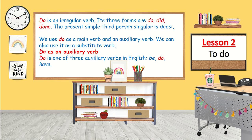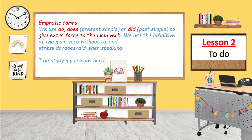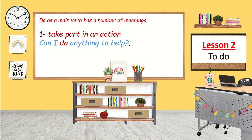Do is one of the three auxiliary verbs in English: be, do, and have. We also have the emphatic form — we use 'do' and 'does' in the present simple, or 'did' in the past simple, to give extra force to the main verb. We use the infinitive of the main verb without 'to', and stress 'do', 'does', or 'did' when speaking. For example: I do study my lessons hard.